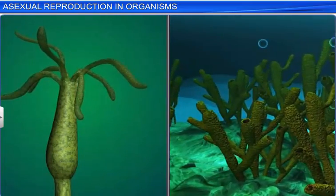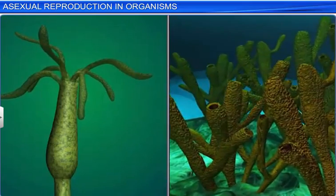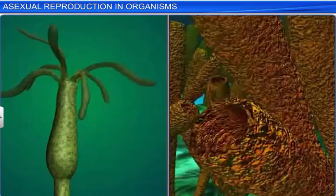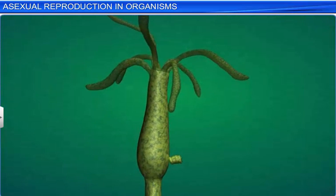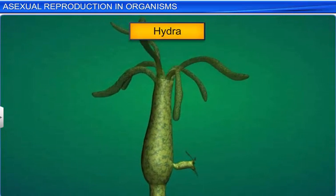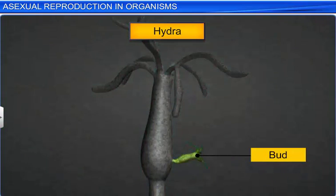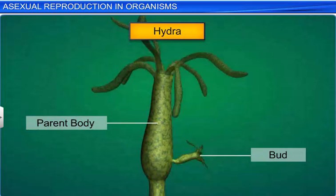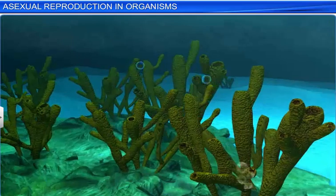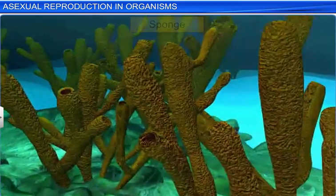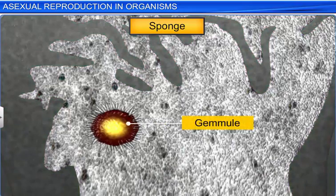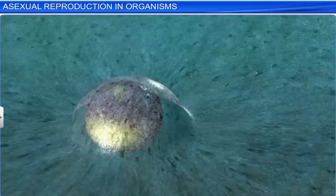Apart from fungi, we also see asexual reproductive structures in certain members of kingdom Animalia. In the case of hydra, buds which develop on the parent body serve as a means of reproduction. Likewise, the sponge produces internal buds called gemmules that aid in asexual reproduction.